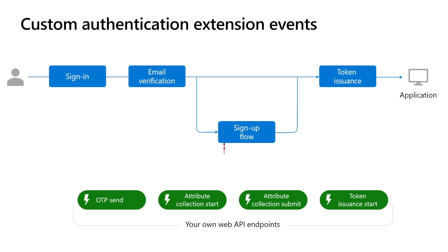The On OTP Send event allows you to customize the verification message using your own mail relay service with your own email template. The On Attribute Collection Start event occurs at the beginning of the self-service signup flow when a user creates a new account in the directory, just before the Attribute Collection page renders. The event could be used for scenarios like prefilling some of the user's signup attributes, such as pre-selecting the country based on the user's IP address, or blocking the user's signup process if the user's email address doesn't exist in your CRM system.